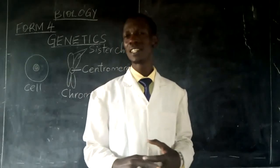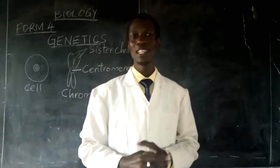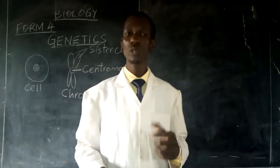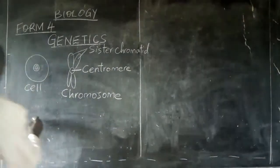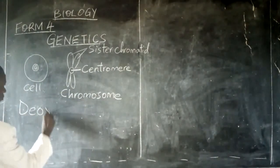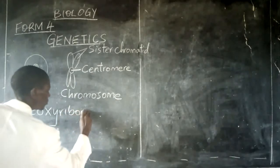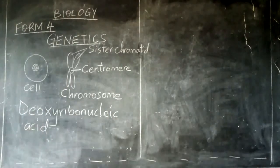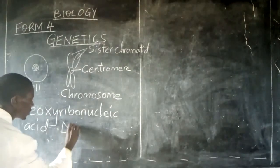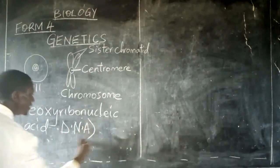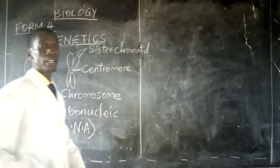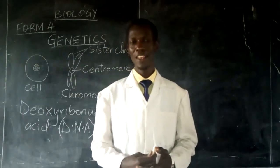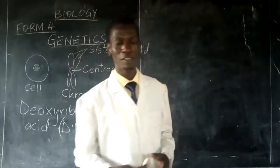A chromosome is a thread-like structure which is found inside the nucleus of a cell. It contains deoxyribonucleic acid, abbreviated as DNA. This is the hereditary material that is found inside the nucleus of a cell, and it is contained on the surface of the chromosome.